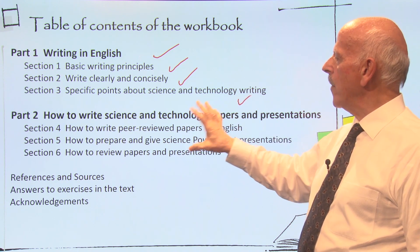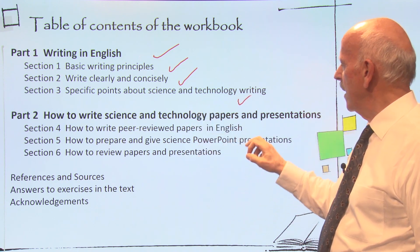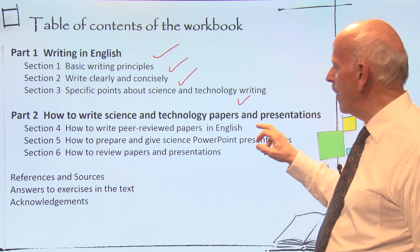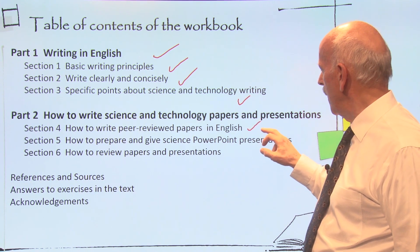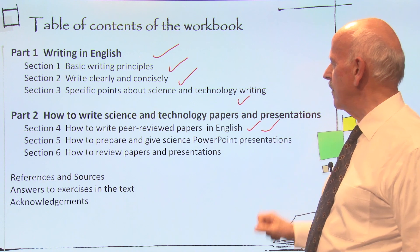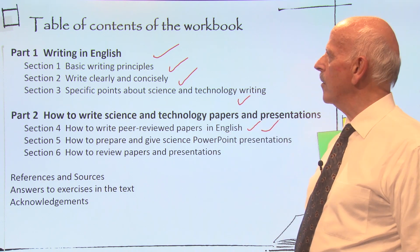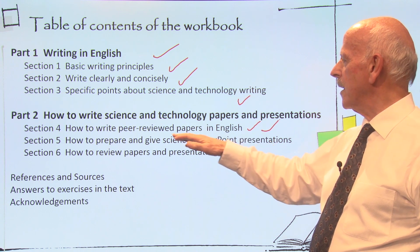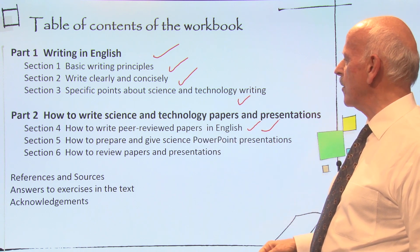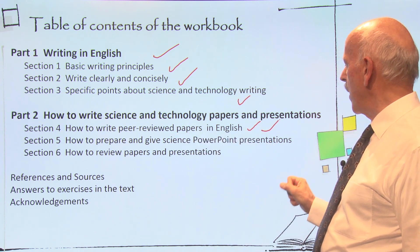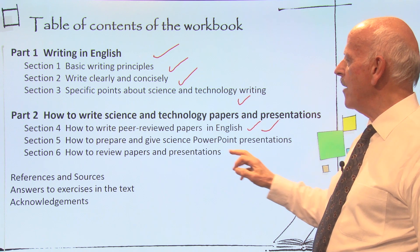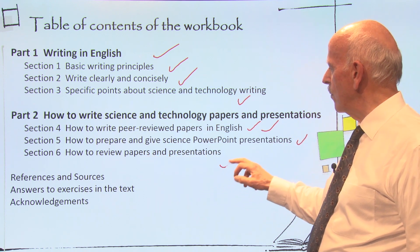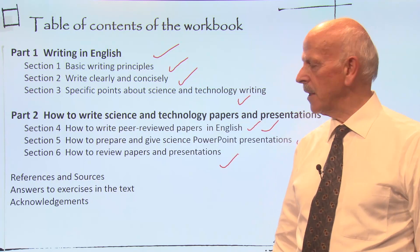The second major part is divided into three sections. The first is how to write the peer-reviewed paper — this is the central part of the book. It continues with how to prepare and give science PowerPoint presentations, and finally, how to review papers and presentations.